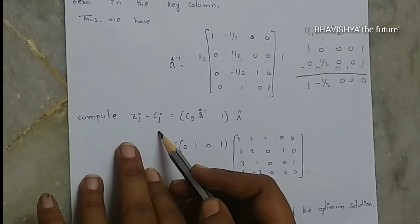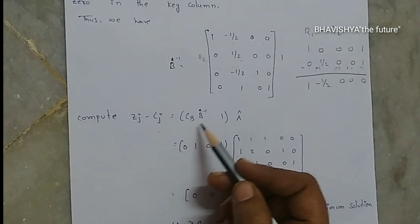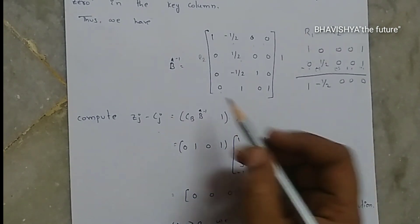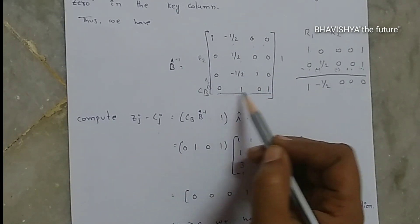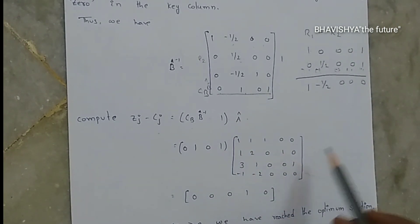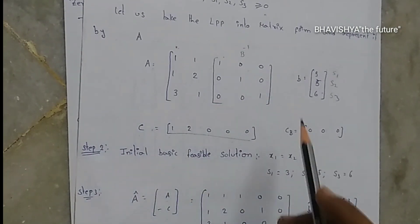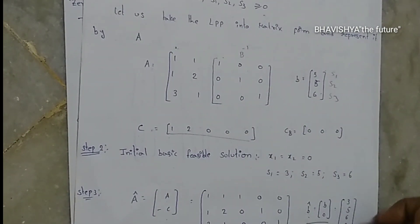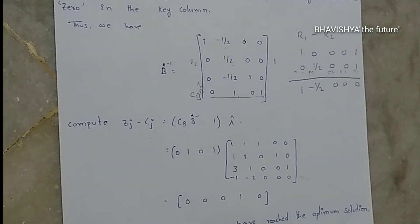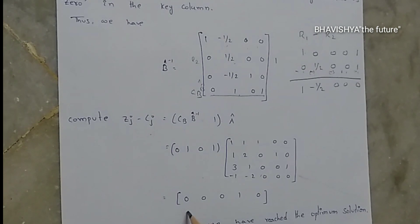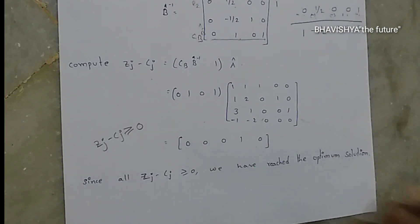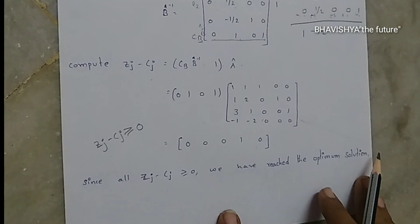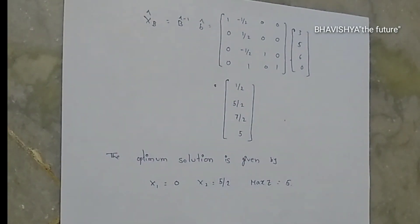Now let us recompute ZJ - CJ using CB·B-inverse-cap·A-cap, where the updated CB is [0, 2, 0, 1] (since x2 entered with coefficient 2 in the objective). All values of ZJ - CJ are now greater than or equal to 0. Since ZJ - CJ ≥ 0 for all variables, we have reached the optimum solution.